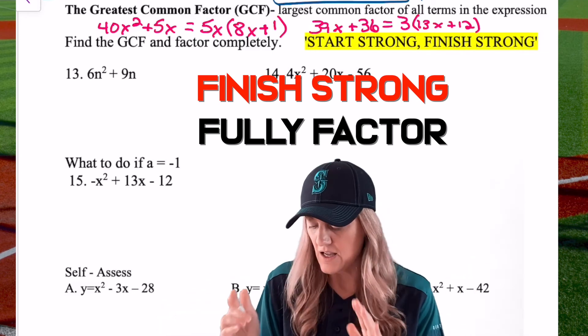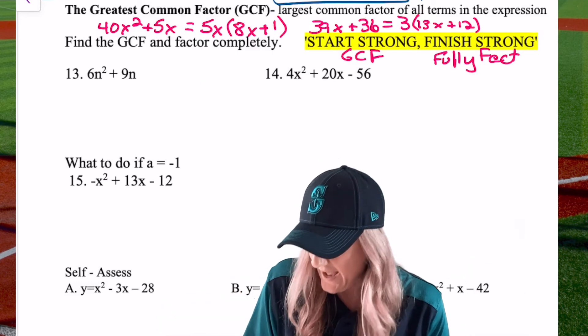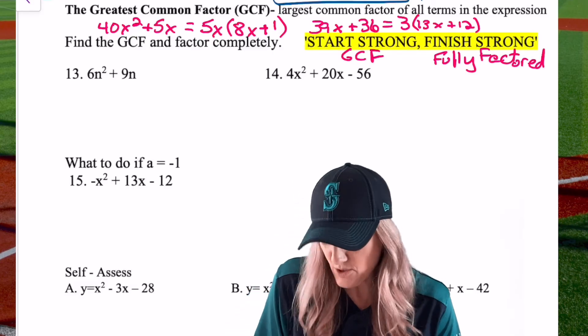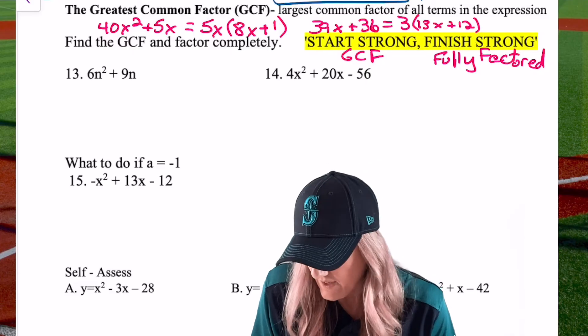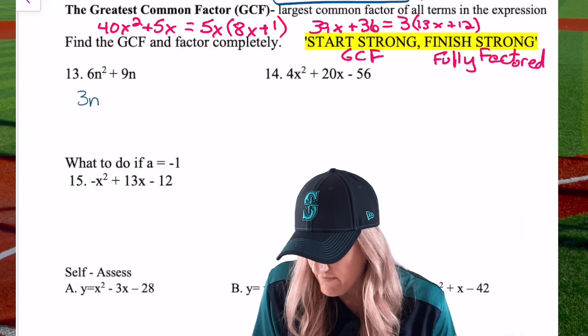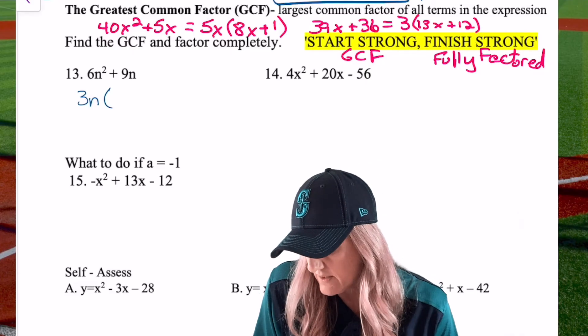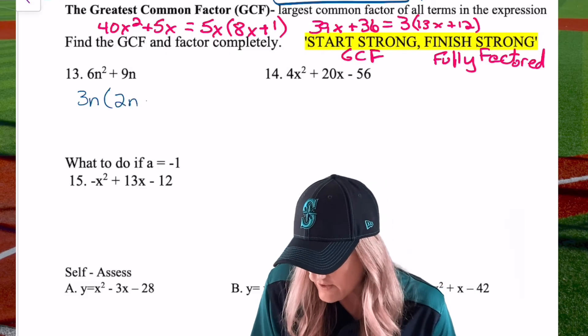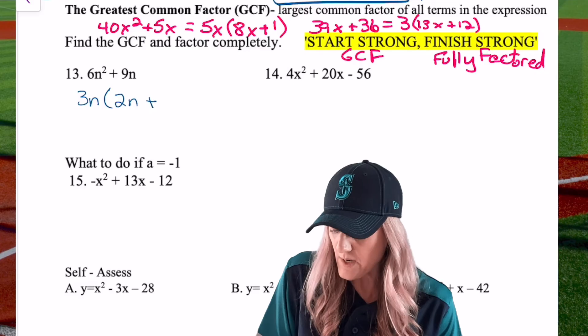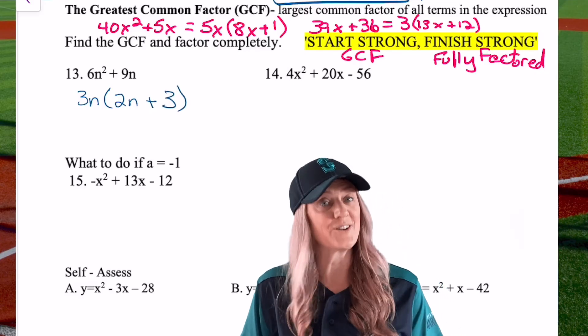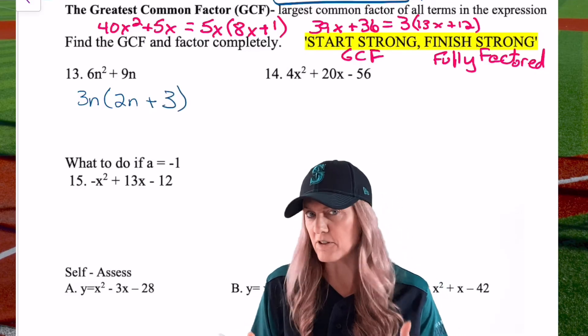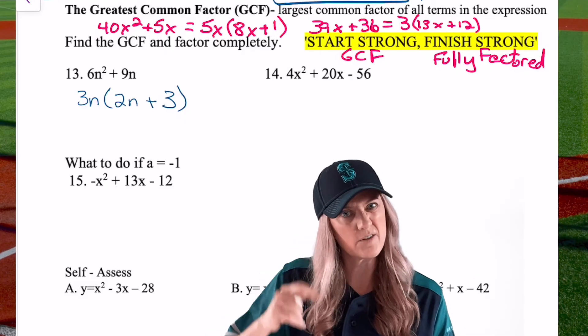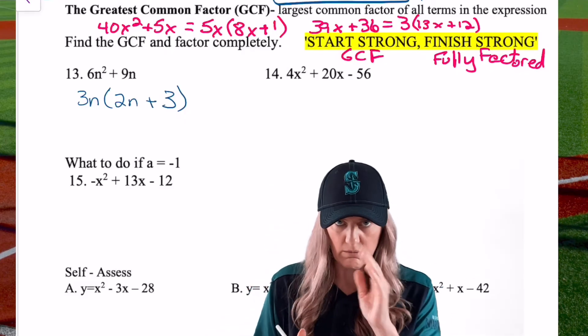Start strong. That means find the GCF and then finish strong. Is it fully factored? Look carefully. On number 13, we have 6 N squared plus 9 N. What's the GCF? Yup. 3 N. So go ahead and factor out a 3 N. Also get used to that word, factor. 3 N times 2 N would be 6 N squared, and 3 N times 3 would be 9 N. There's our factored form. Now, is that fully factored? Yes, it is. 3 N into the first power. 2 N plus 3 into the first power.